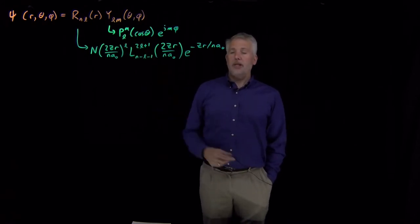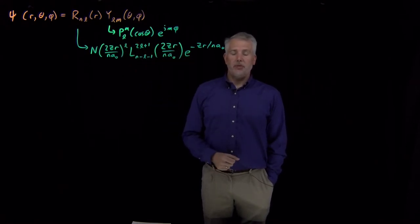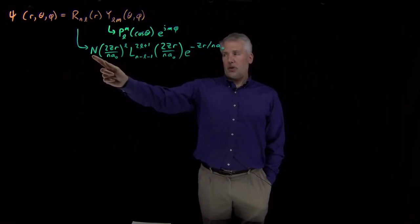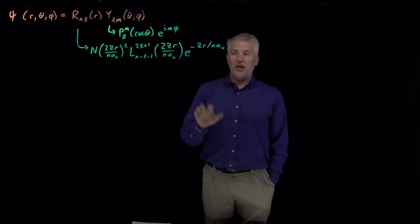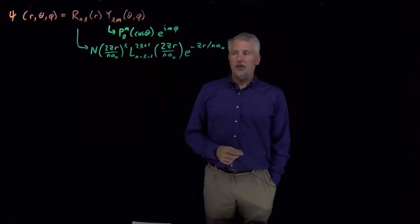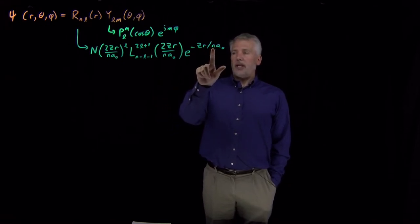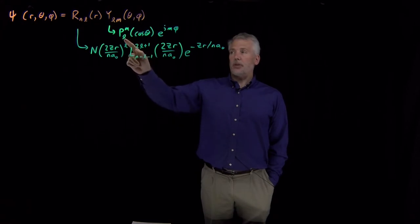The angular piece was familiar to us from the rigid rotor, so it has the same form as the rigid rotor wave function. The radial piece, after some work, we decided was a normalization constant times some pieces that look like polynomials in r times a decaying exponential. The radial piece depends on these two quantum numbers n and l, and the angular piece depends on the quantum numbers l and m.